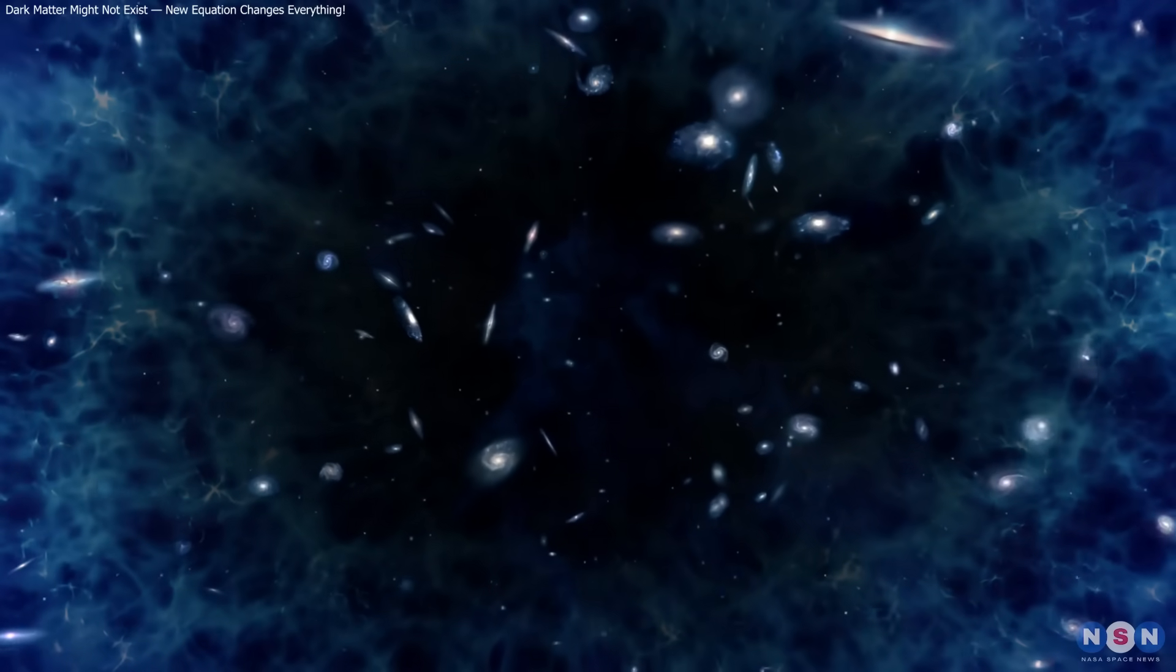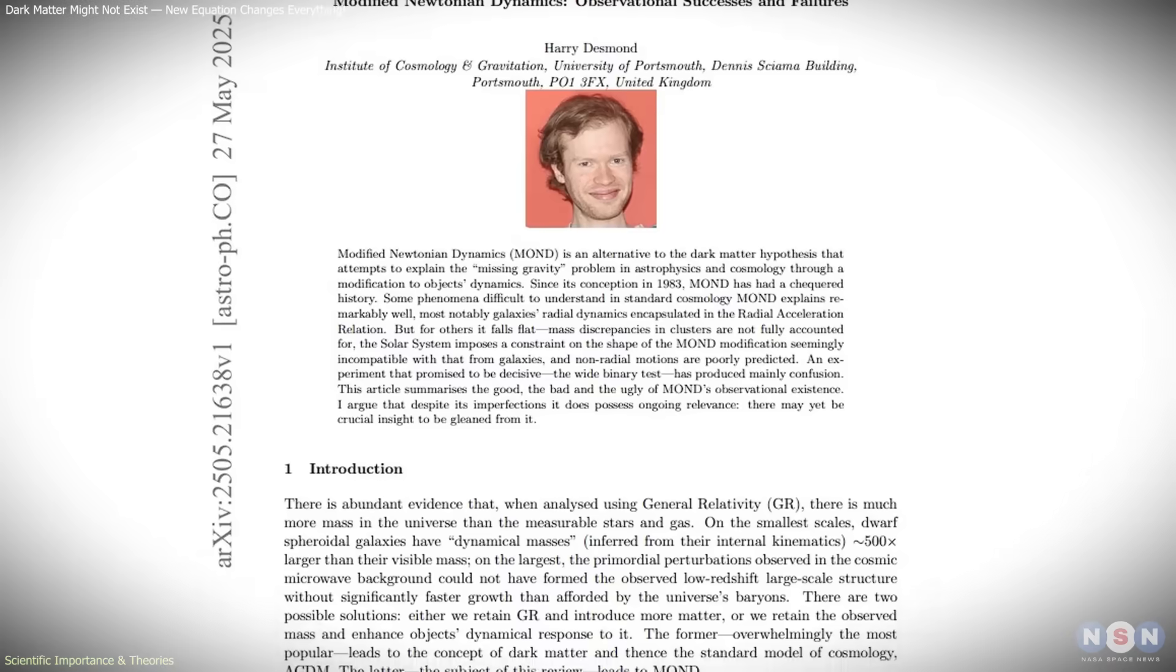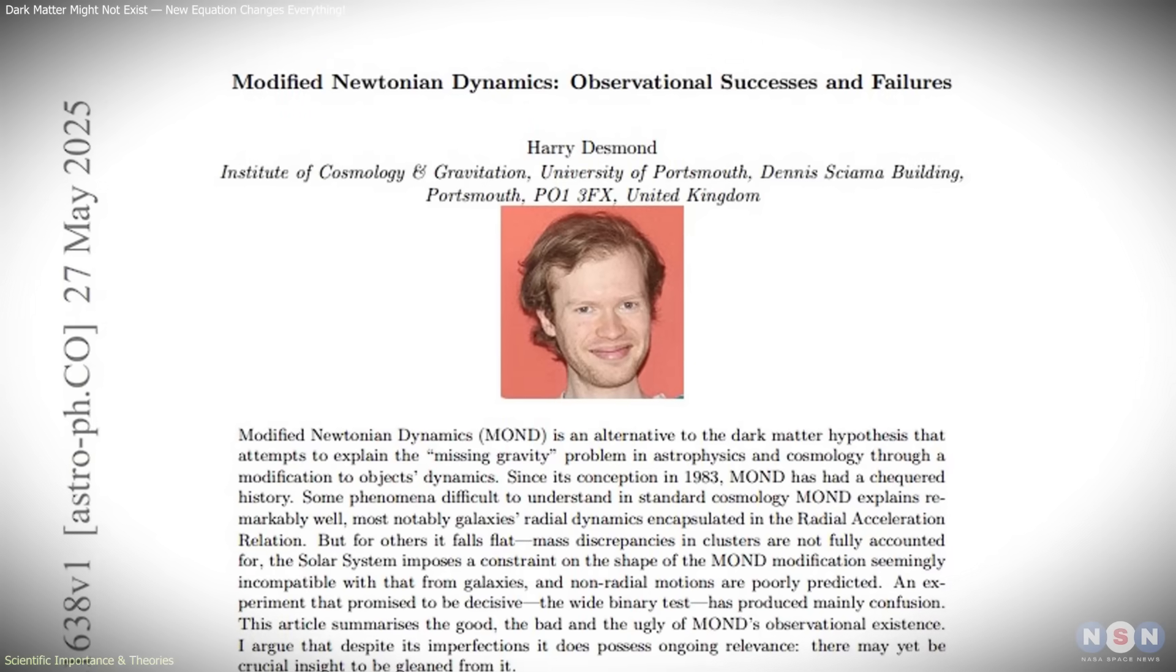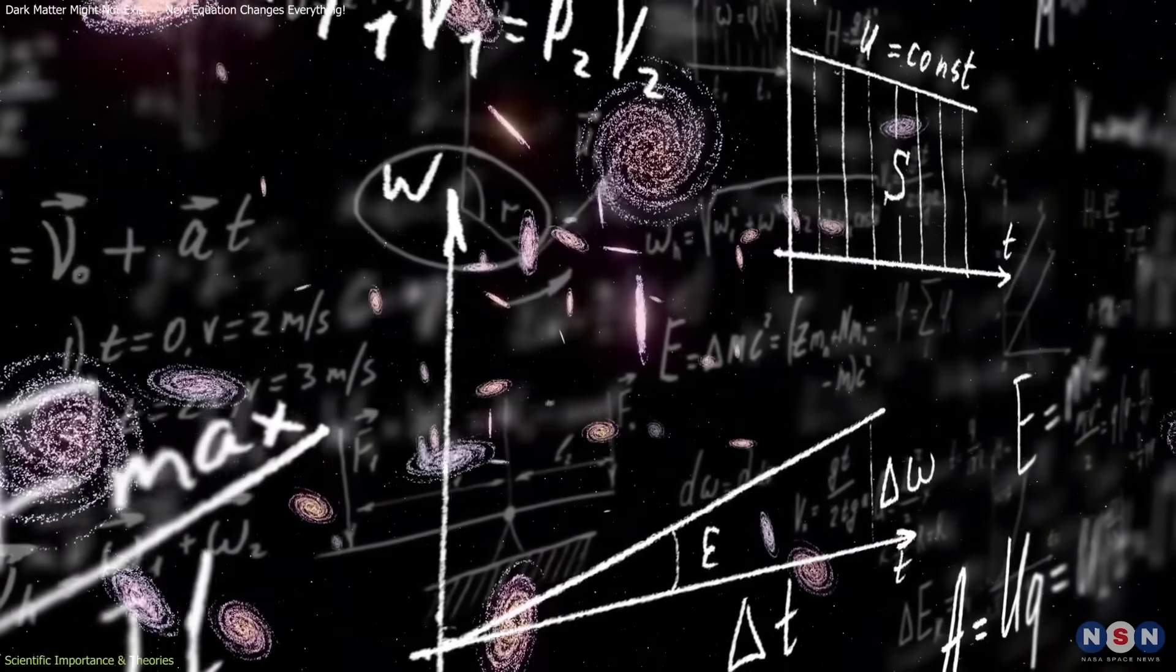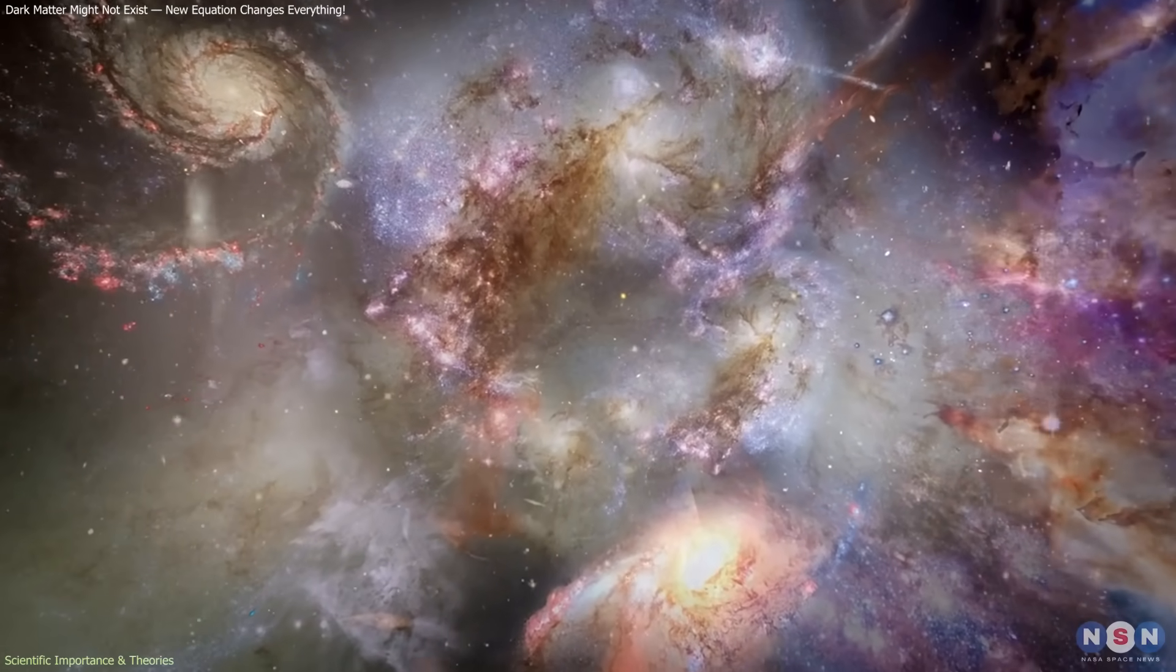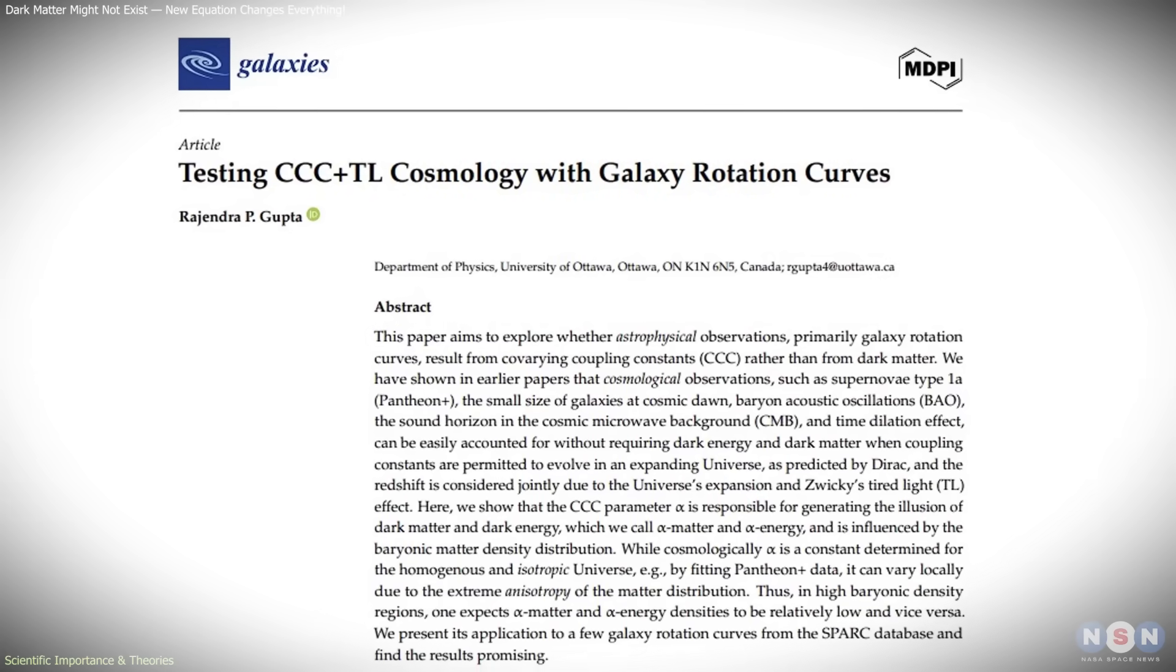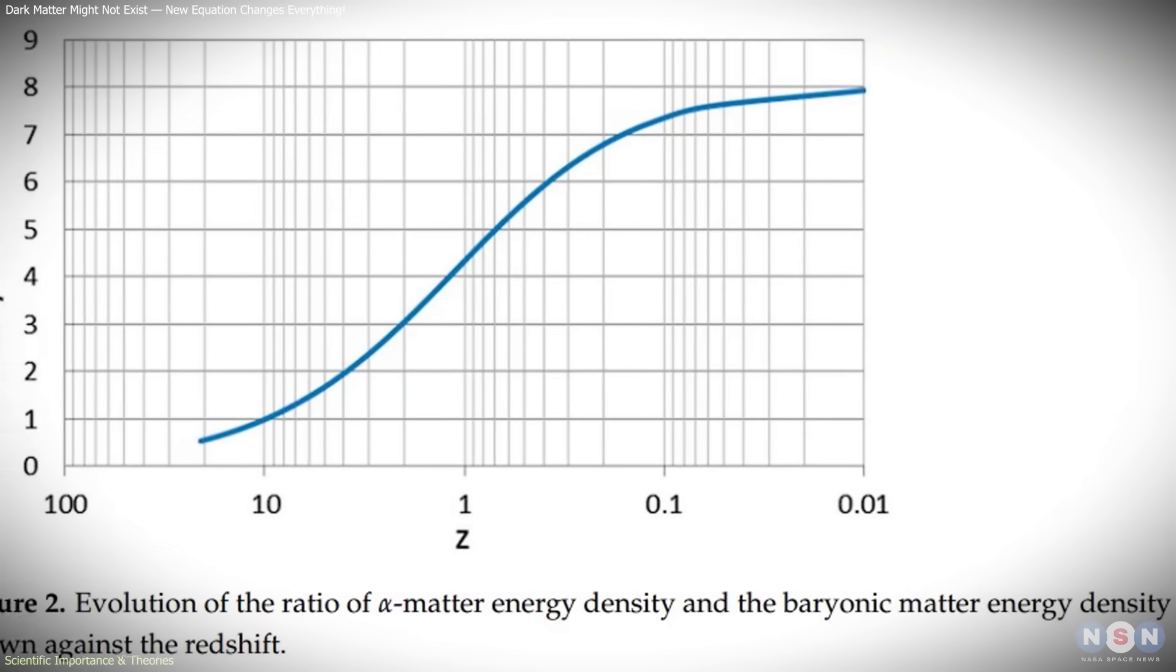This isn't the first attempt to explain the cosmos without dark matter or dark energy. Since the 1980s, alternative theories like modified Newtonian dynamics (MOND) have proposed that Newton's laws behave differently under extremely weak gravitational fields. MOND successfully explained the flat rotation curves of some galaxies, but struggled to describe larger structures, such as galaxy clusters, and the universe's overall expansion. Gupta's model takes a different route. It doesn't modify gravity itself, but instead lets the constants that govern physical laws evolve over time.